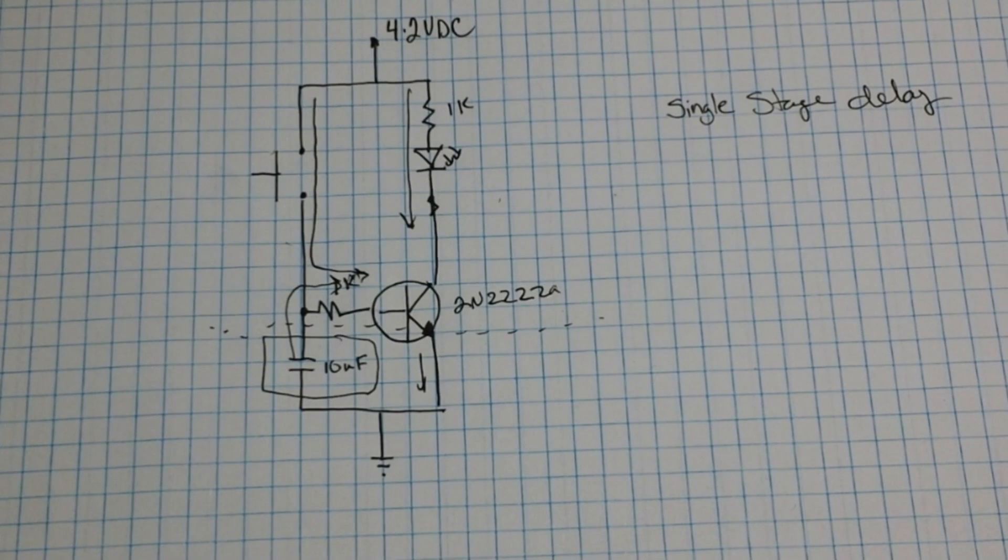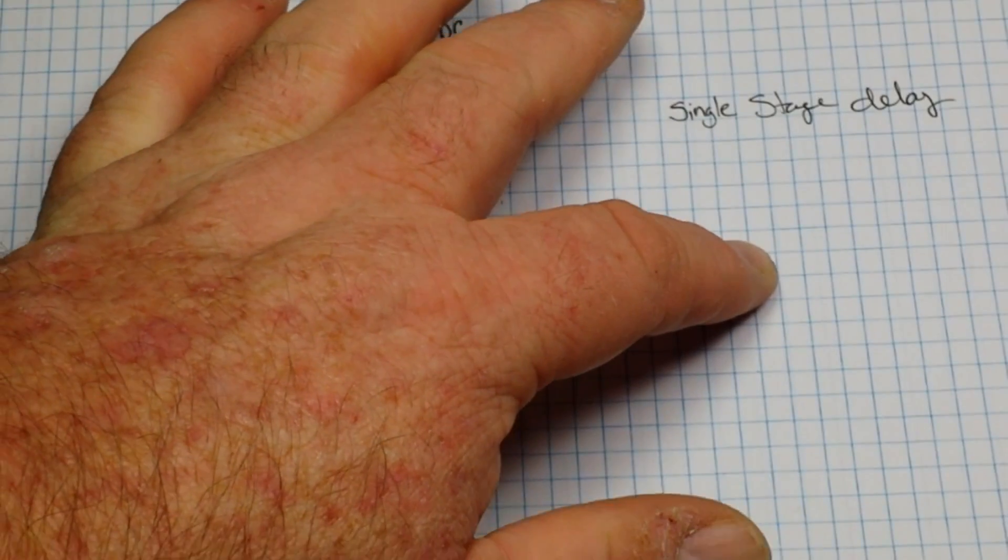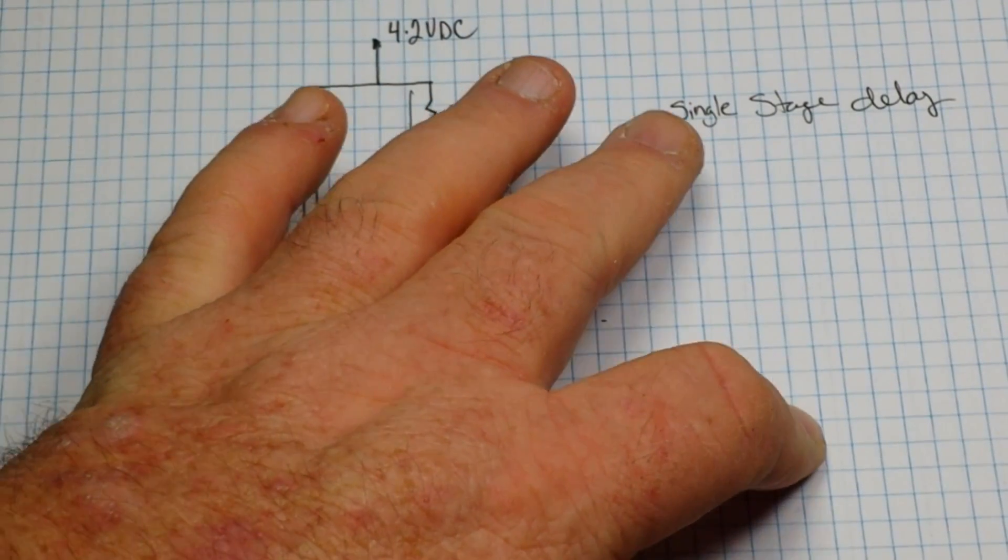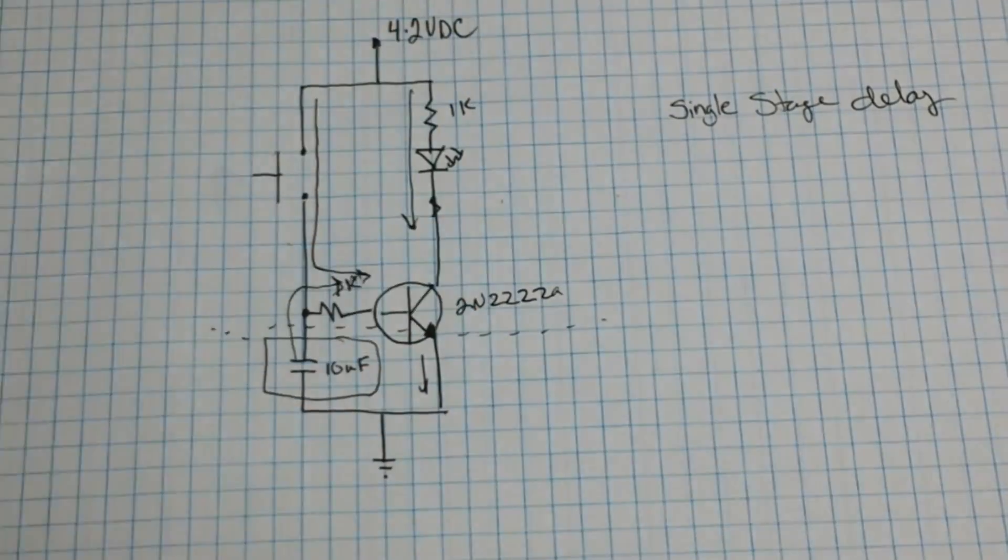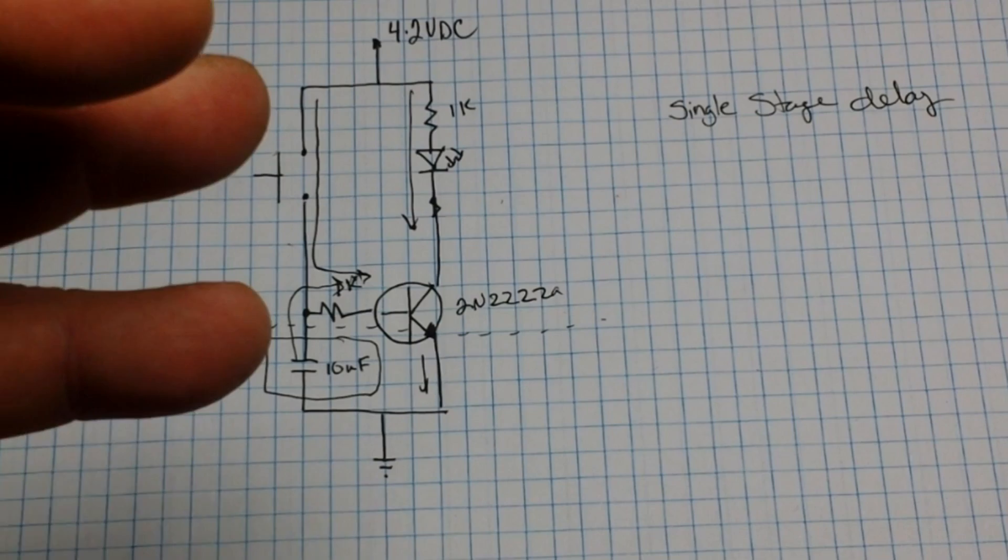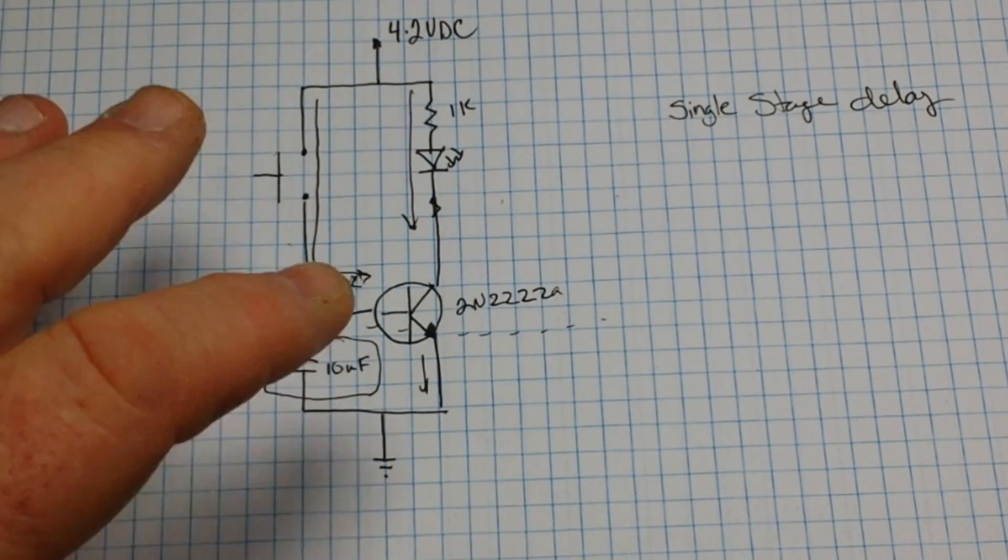You're going to use delays in things that require sequential activation. If you have a complicated product that needs things switched on - first this switches on and it needs to come up to temperature, then we can switch on part two, then it has to stabilize and then part three. Those are the types of circuits in which you are going to use a delay. And yes, you can get ICs for it, but that takes out all the fun. It's fun to know how these things work made out of discrete components.